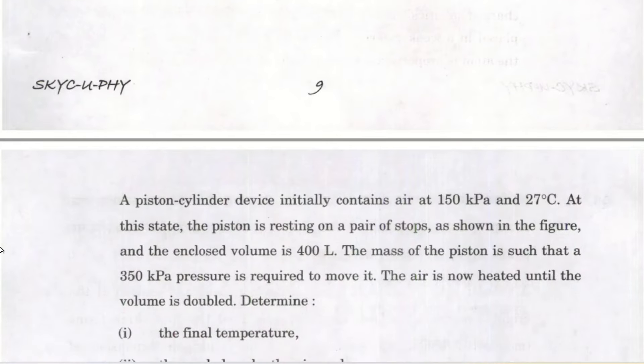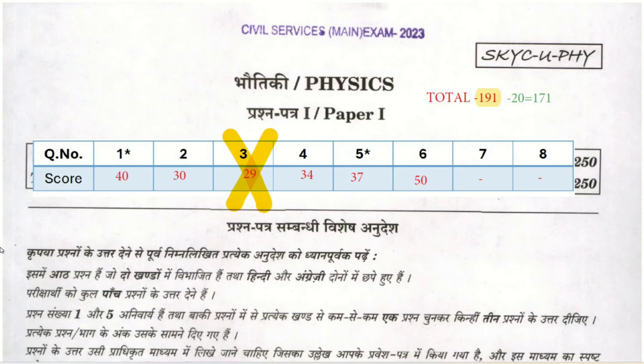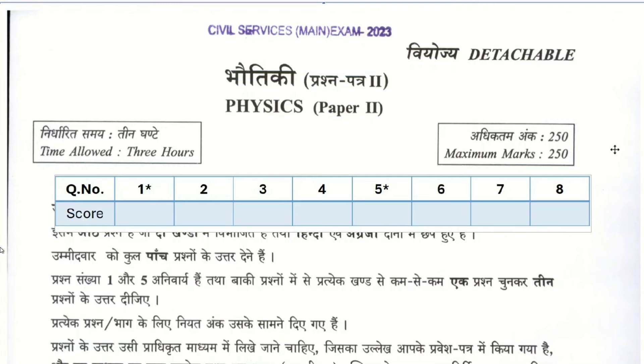Questions 7 and 8 are purely numerical based, so we skip them. We are skipping Question 3 in which we scored 29 marks — the lowest score. We add the other five scores: 40, 30, 34, 37, and 50, giving a total of 191. After a gross cut of 20 marks, we get 171 from Paper 1.